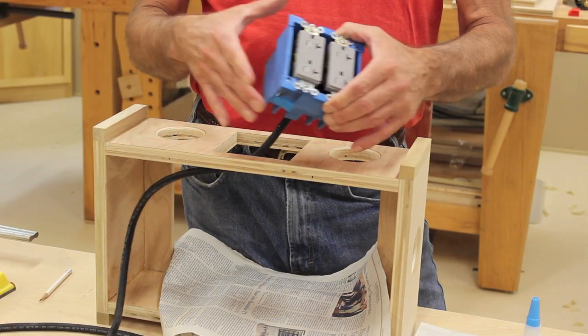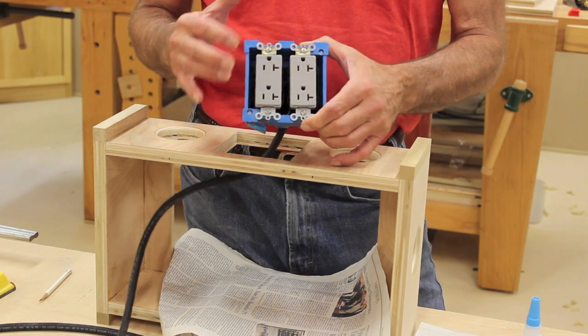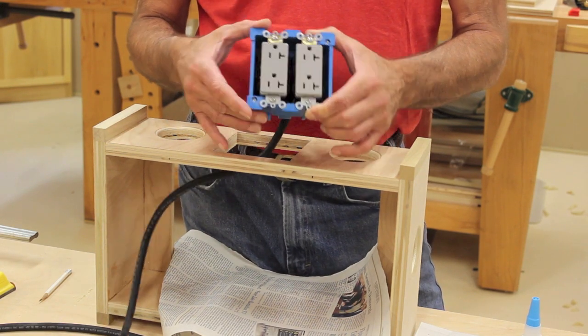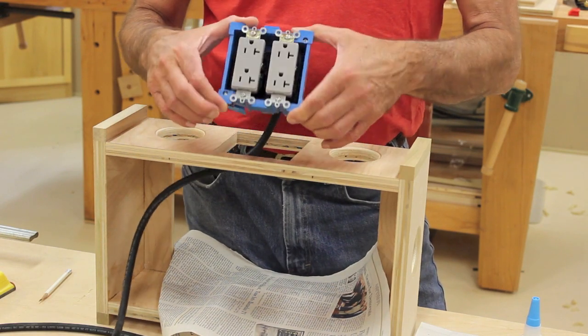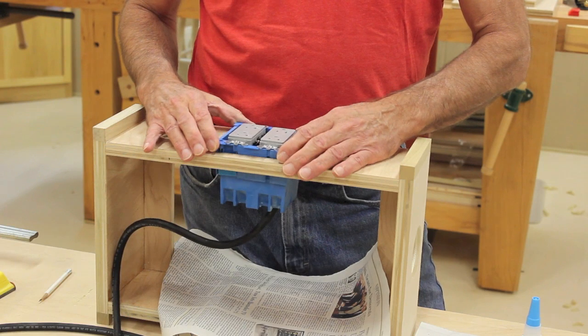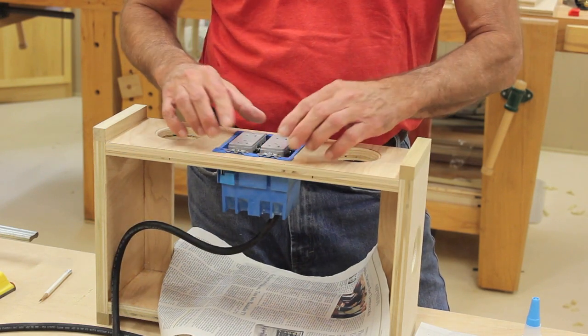While the rest of the top assembly is drying in clamps, I went ahead and wired up our electrical box. Two receptacles, four outlets in total in this duplex box here. And I set it in here and marked where the little tabs are.